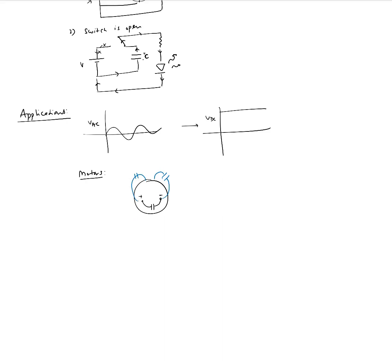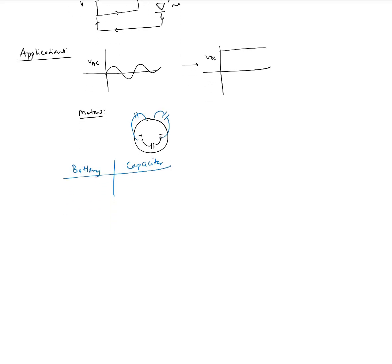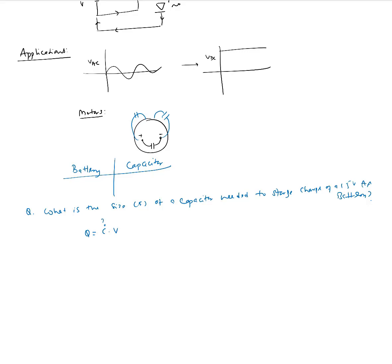We have talked about the difference between a primary source of energy like a battery versus a capacitor, which is a secondary source of energy. Just for fun, let's find out how big a capacitor we would need to store the charge in a 1.5 volt AA battery. Using Q equals C times V, with voltage equal to 1.5 volts, we need to know the total charge Q stored in the battery.